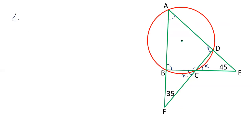So first of all, let us find out the value of ABC. Now, ABC is exterior to triangle BCF and therefore it equals the sum of interior opposite angle F.